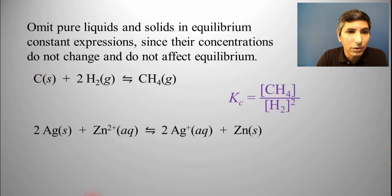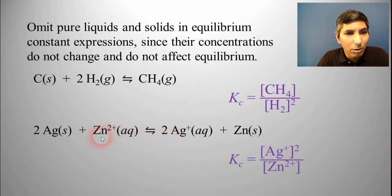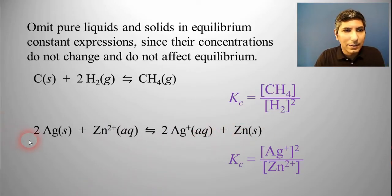In this next equation, this looks like a redox reaction that we might have written back in unit 4. We're going to, once again, leave out the solids. So, it's going to be KC equals Ag+ quantity squared all over Zn2+. That's all it is. We're going to leave out the solids, the zinc, the silver metals. Those are not a part of this.